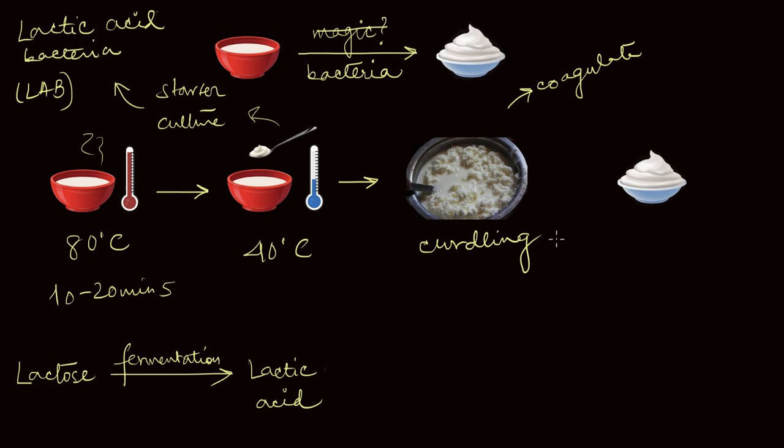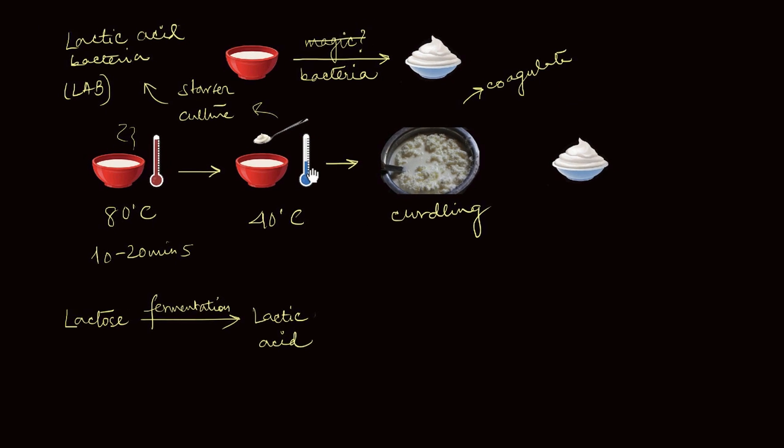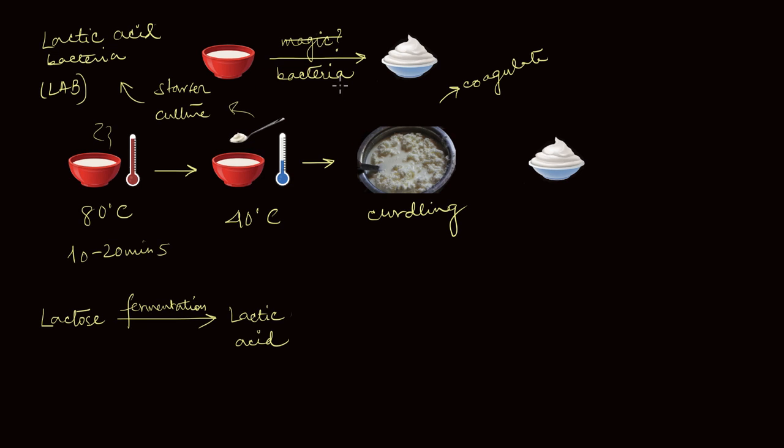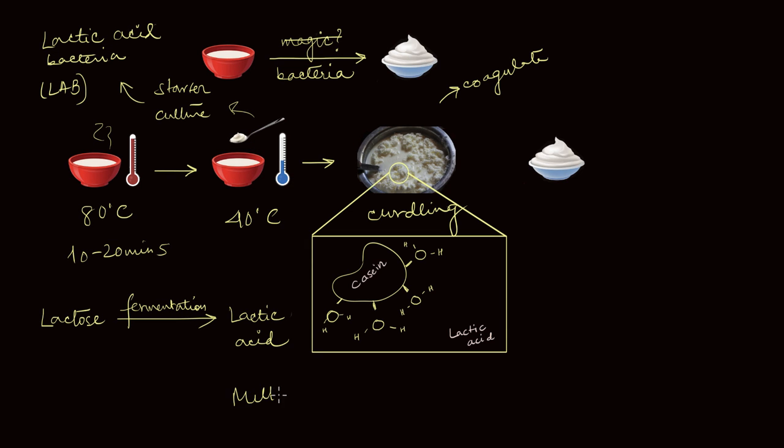But why? Why is this happening in the first place? What is this lactic acid doing to the milk to make it curdle so much? Okay, so let's make a little bit of space here first. Alright. So milk is made up of three things: there's water, then there are fats, and then there are proteins.